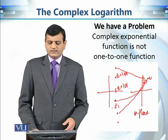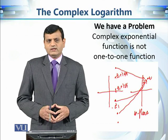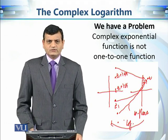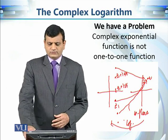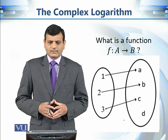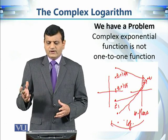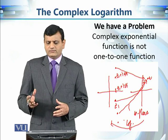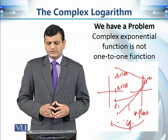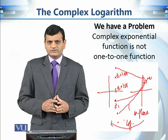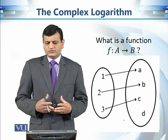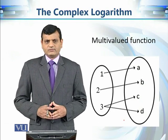If we want to define the inverse of the complex exponential function — let's call it the logarithmic function — is it possible? By the definition of a function, each element of a set A must be assigned to a unique element of set B. But in this scenario, if we define the inverse of the exponential function, corresponding to w there are infinitely many elements in the z-plane. To solve this issue, we define a multivalued function.